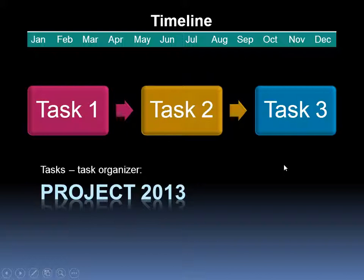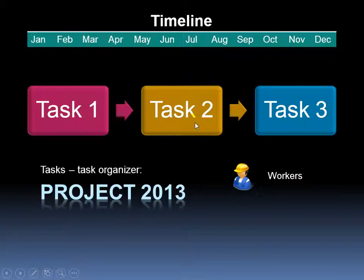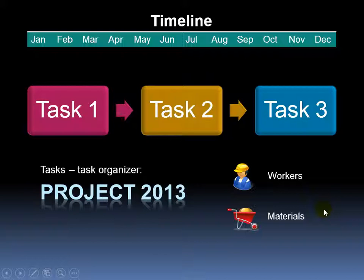Each task is going to require some resources, and there are three types of resources. First, you have your workers — who's going to work on task 1, task 2, and so on. For example, task 2, writing the book, you can assign writers. The next resource would be materials: do they need a ream of paper to write the book on, or are they going to use a word processing program like Word 2013?